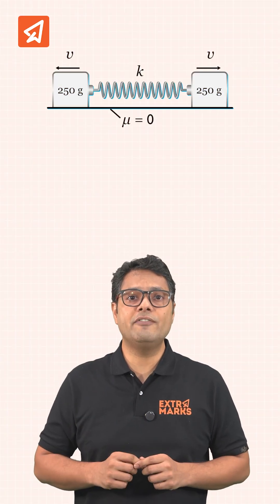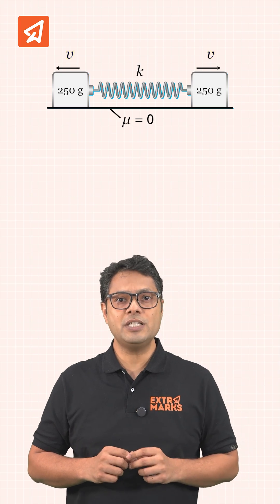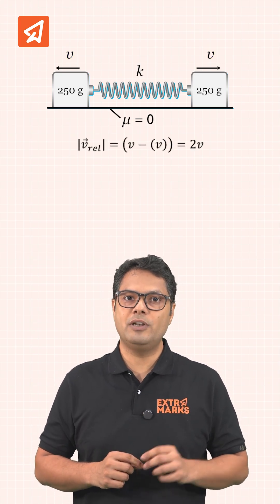Let's solve a JEE PYQ using this trick. So in this question, both blocks are given velocity v in opposite directions. So the relative velocity of one block with respect to other will be 2v.